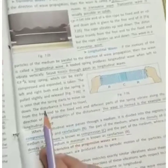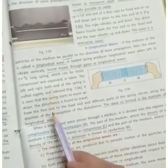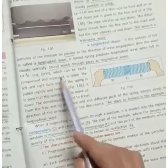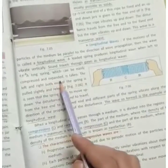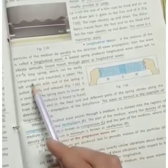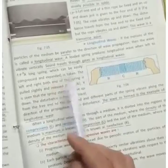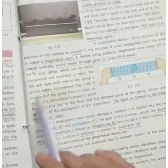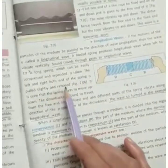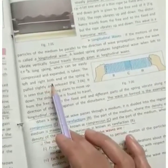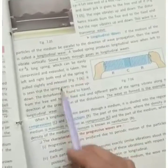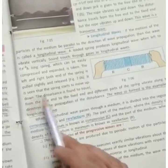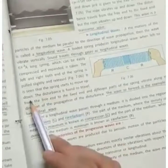The example of this type of motion: a long spring which can be easily compressed and expanded. Left and right bottom end of the spring is pulled slightly and released.